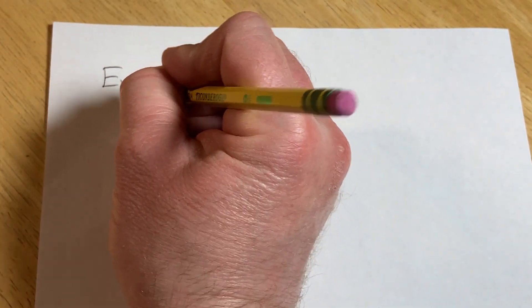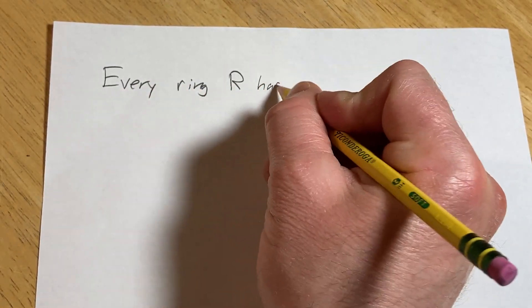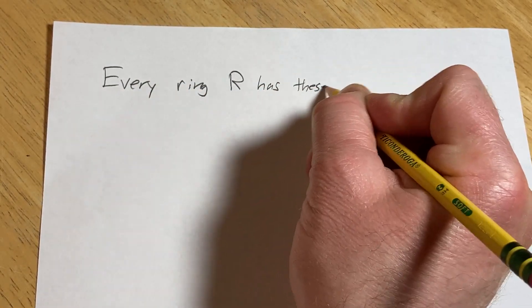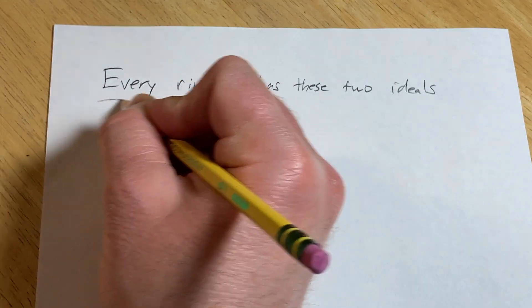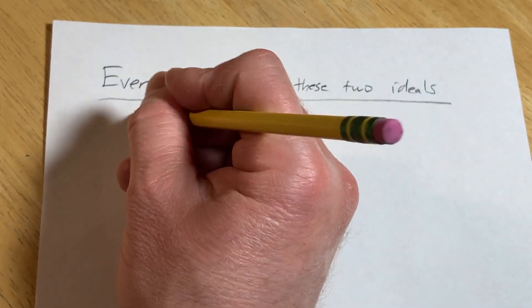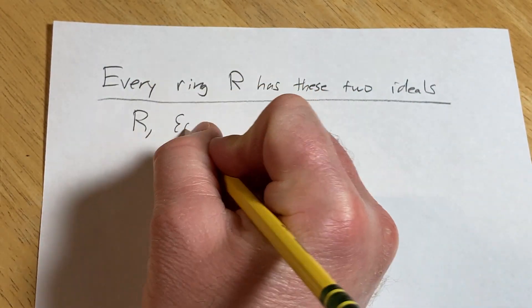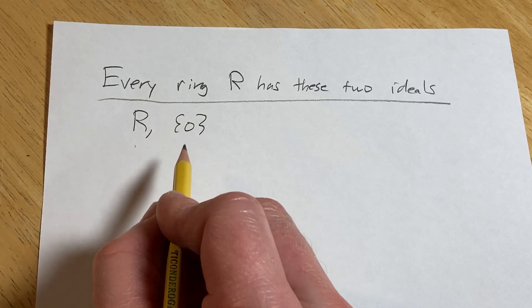Every ring R has these two ideals. Every single ring has them. The ideals are R and 0, right here. These two: the entire ring and the ideal consisting of just 0.